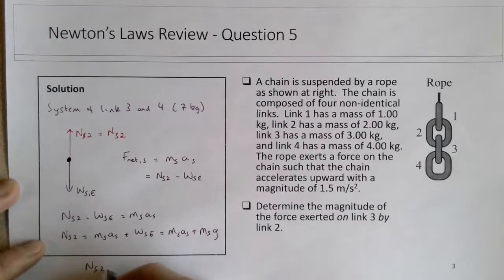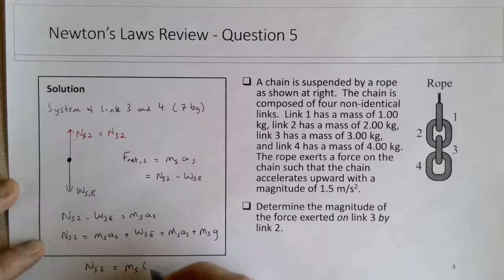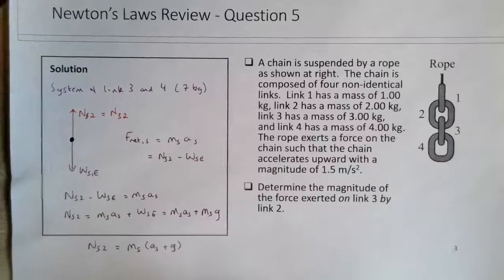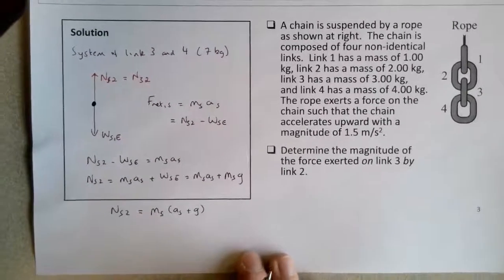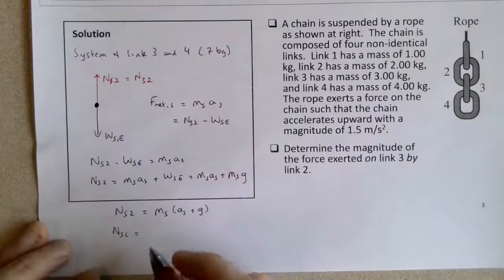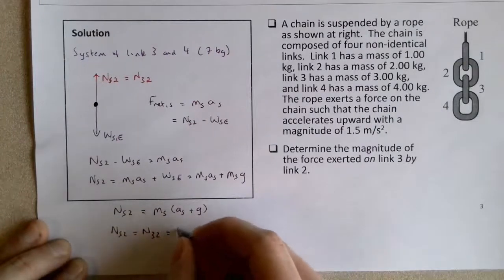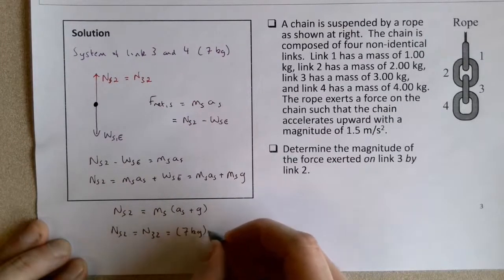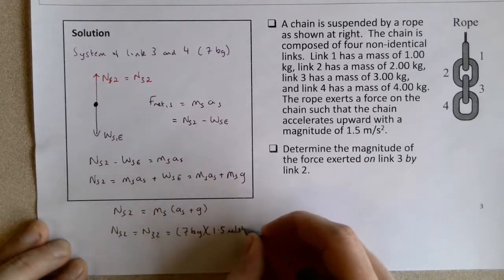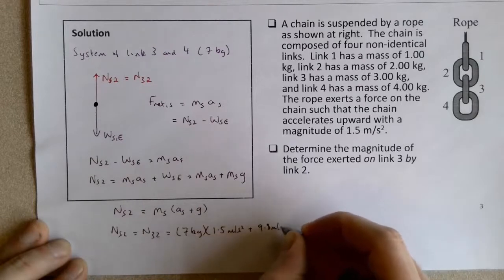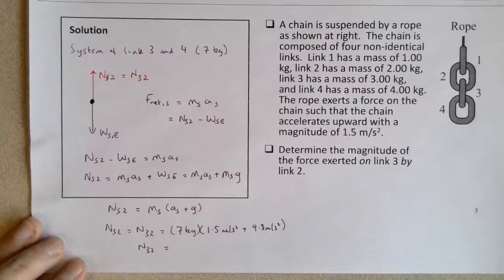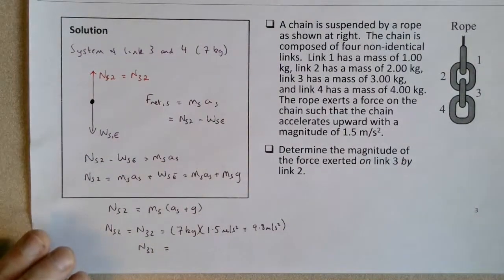So NS2 will be equal to the mass of the system times the acceleration plus g. And then we can solve here, NS2 as we see it up here is equivalent to N32. It's going to be the mass of the system, which is 7 kg, the acceleration of the system is upward, 1.5 meters per second squared, plus 9.8 meters per second squared, so N32 is equal to 79.1 newtons.